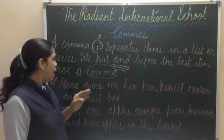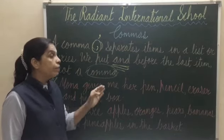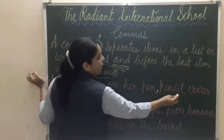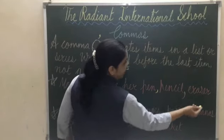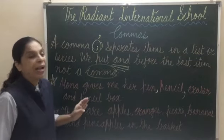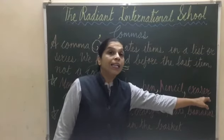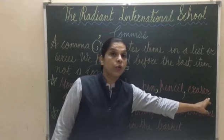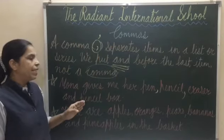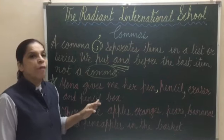Mona gives me her pen, pencil, eraser, and pencil box. Mona ne kya diya — pen di, phir comma, pencil, again comma, eraser, and pencil box. Eraser ke baad comma nahi aaya because eraser ke baad the last item is pencil box.